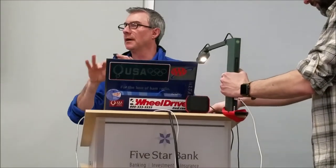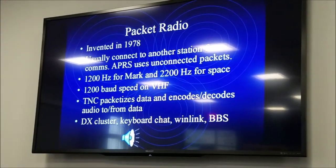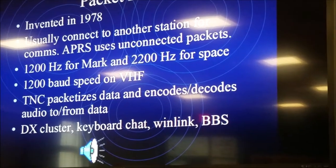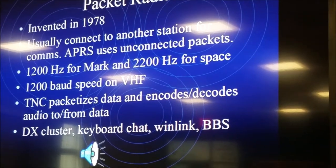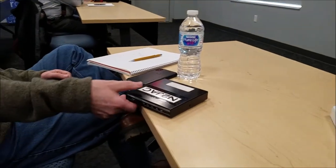What packet radio does is take your computer data, your text string, and convert it to tones — two tones. It's that noise you hear before the British guy speaks a call sign. The speed on VHF is 1200 baud — the same as those old 1200 baud computer modems. It's more for keyboard chatting than sending files, although you can send files very slowly. The TNC was the gadget invented in 1978 that converted the data into the string. This is a newer TNC — it's a terminal node controller.